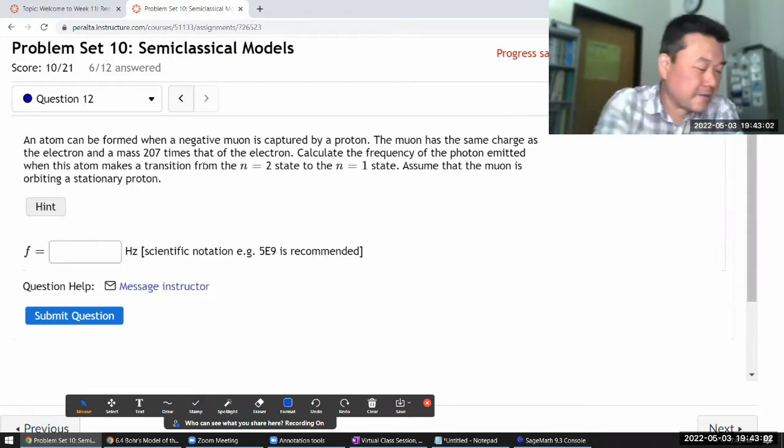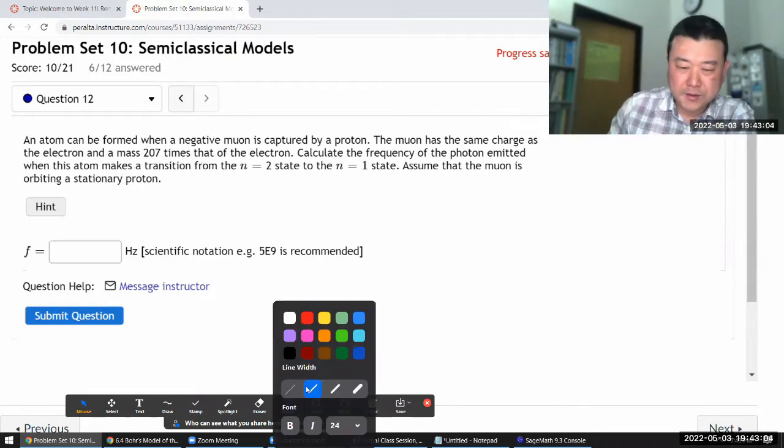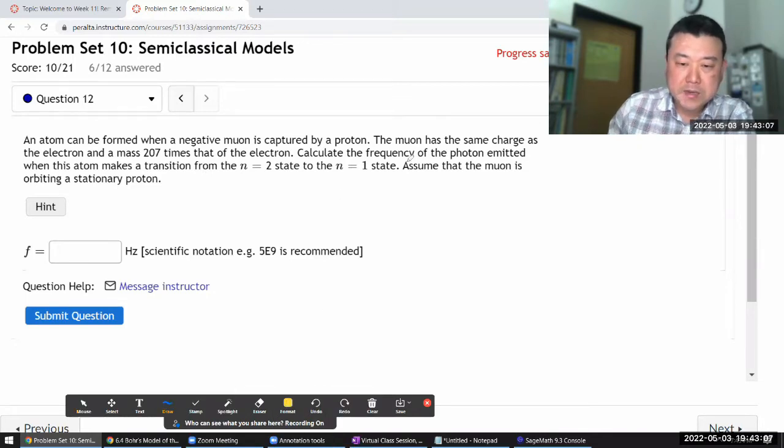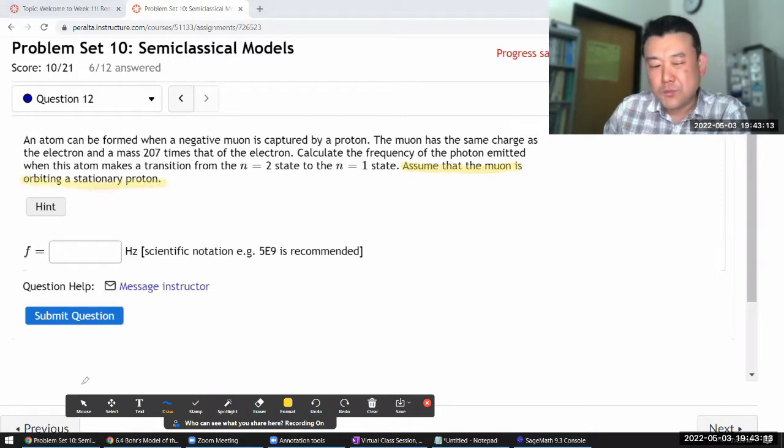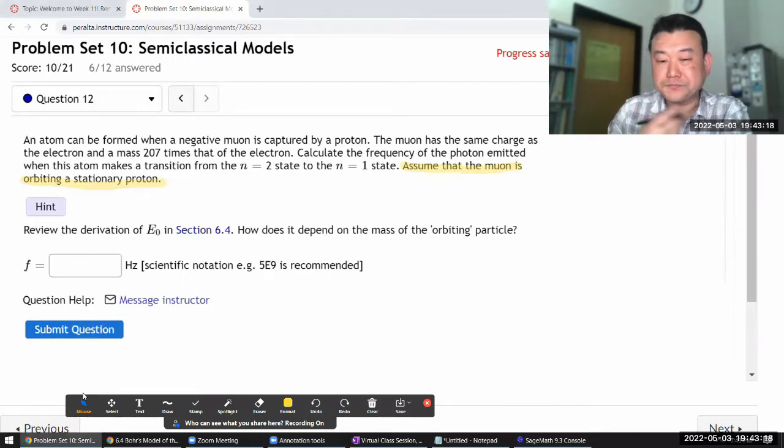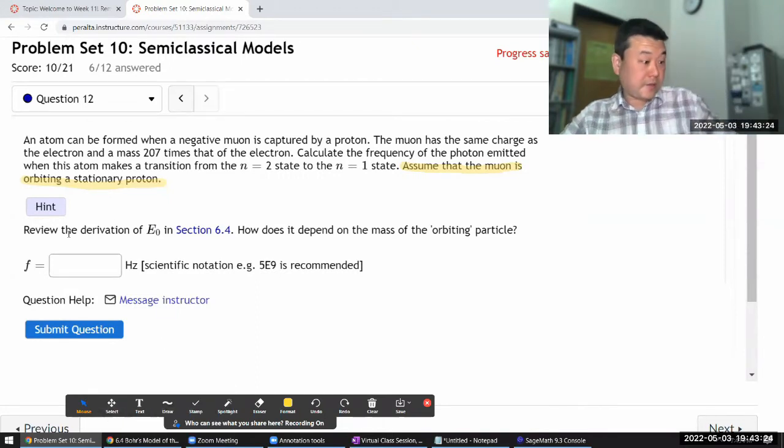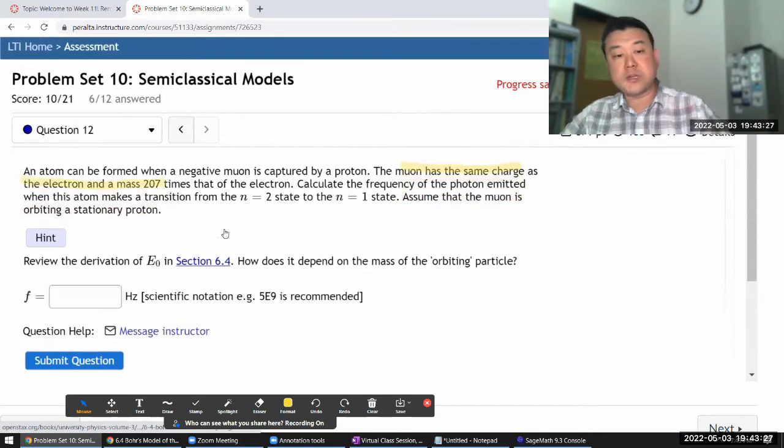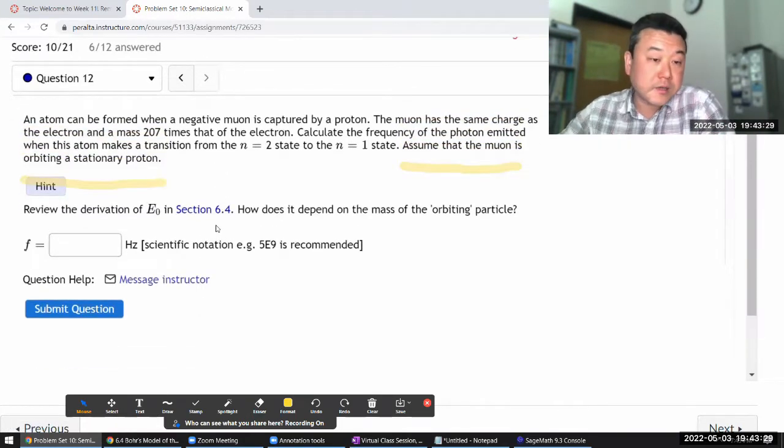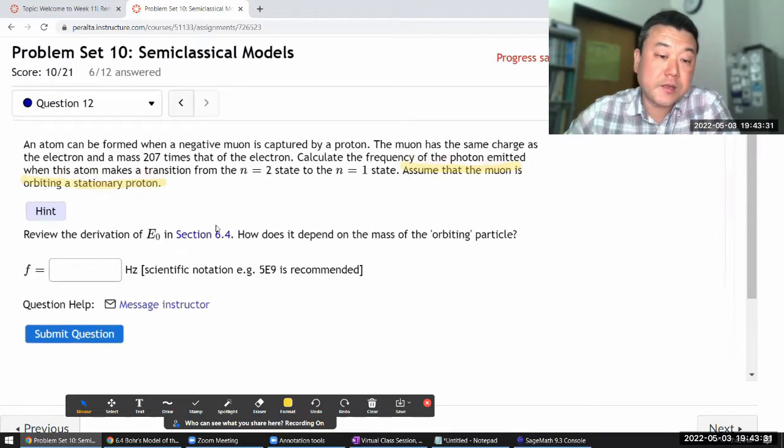This statement may sound a little bit odd. It's designed to allow you to answer this question more simply than you otherwise could if you were doing it 100% correctly. The hint says review the derivation of the energy levels. Let's take a look—maybe there's something there that will give us a hint on how to make this change.